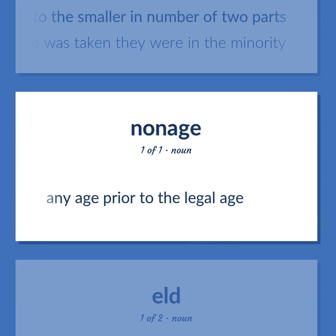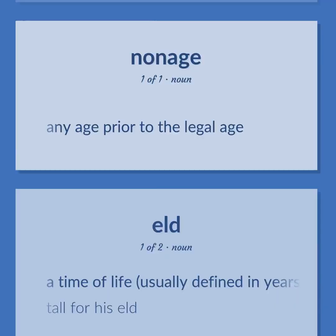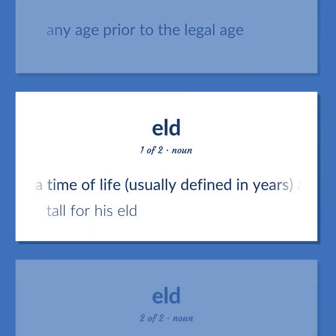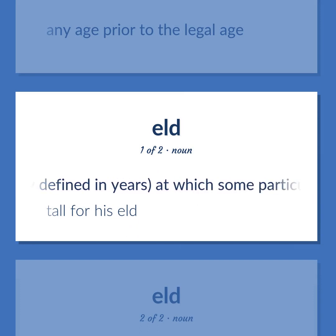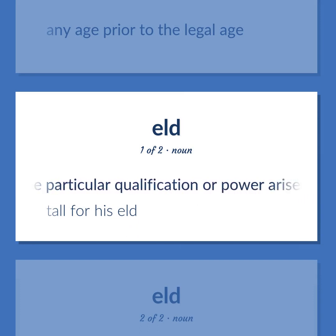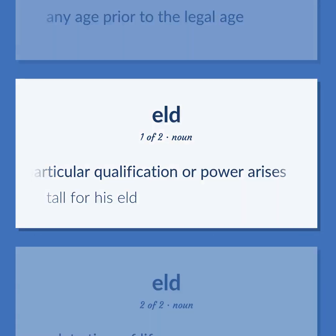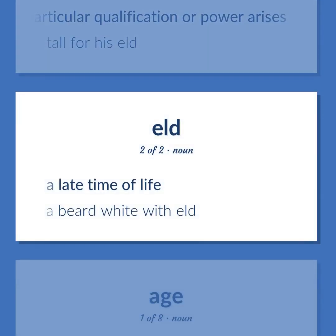Age. Any age prior to the legal age. A time of life, usually defined in years, at which some particular qualification or power arises. Example: Tall for his eld. A late time of life. Example: A beard white with eld.